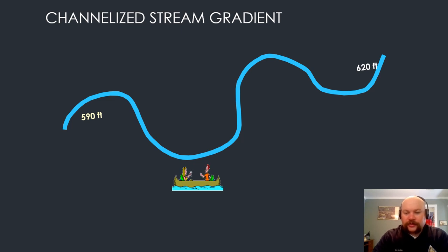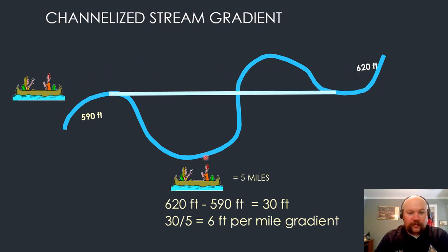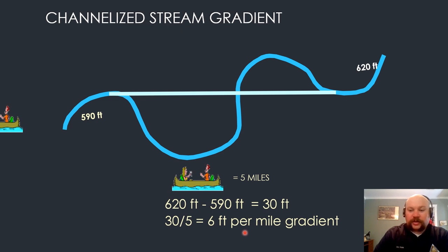We're now going to channelize this stream, altering its gradient. We still have the same change in elevation; however, the length of our stream is going to be shorter as we have heavy machinery come in and cut a new path, reducing the distance of these curves. Our floaters now are going to move much faster through the reach of river because our total length is cut in half to five miles, increasing our gradient or the energy component significantly. We were at a three foot per mile gradient and we are now at a six foot per mile gradient. This allows the channel and the water in the channel to have much more energy to erode material such as the stream banks and the stream bed.